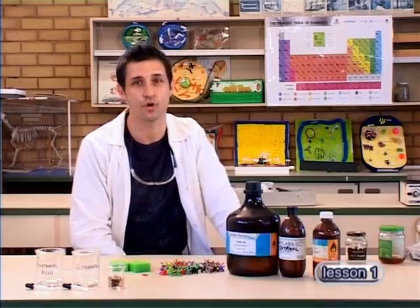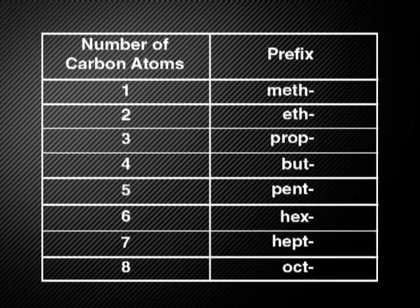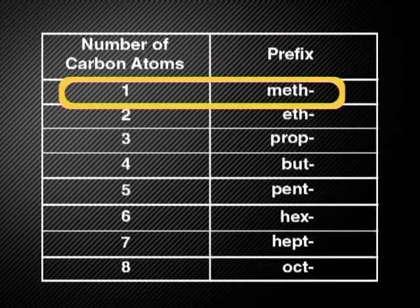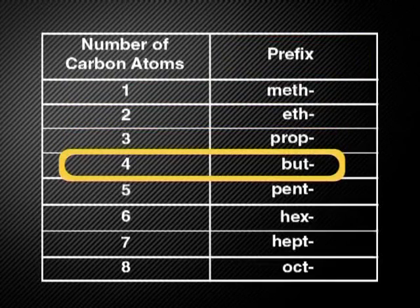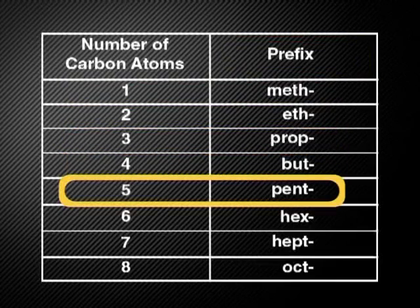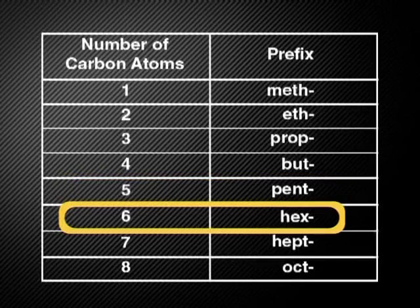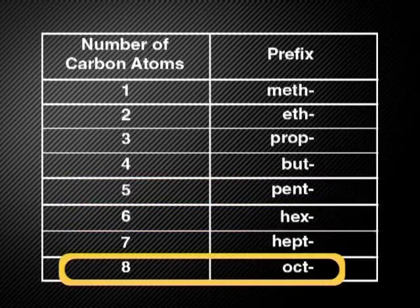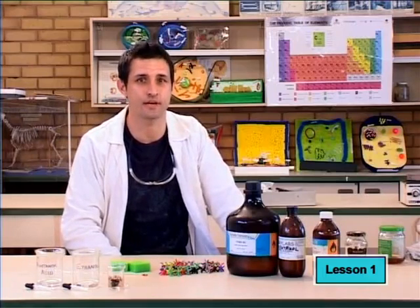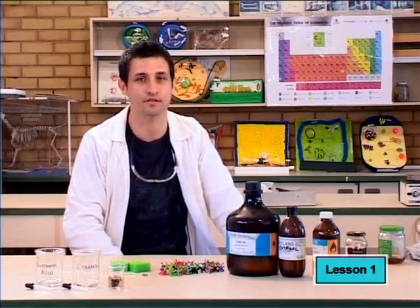The IUPAC system works like this: in any carbon molecule, we first count the longest continuous carbon chain. This gives us the first part of the name, sometimes called the prefix. One carbon is meth, two carbons is eth, three carbons is prop, and so on. After five carbons, the Greek system of noting numbers takes over — you may recognize this from maths, where a hexagon has six sides. Seven is hept, and eight is oct. Once we have the prefix, we add an ending to the name which describes how the carbon atoms are bonded.